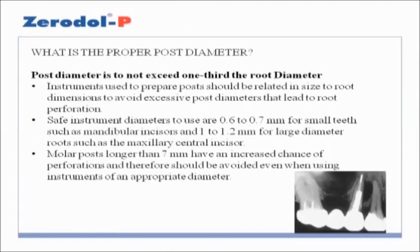What is the proper post diameter? Post diameter must not exceed one third the root diameter. Instruments used to prepare posts should be related in size to root dimensions to avoid excessive post diameters that lead to root perforation. Safe instrument diameters to use are 0.6 to 0.7 mm for small teeth such as mandibular incisors, and 1 to 1.2 mm for large diameter roots such as the maxillary central incisor. Molar posts longer than 7 mm have an increased chance of perforation and therefore should be avoided even when using instruments of an appropriate diameter.